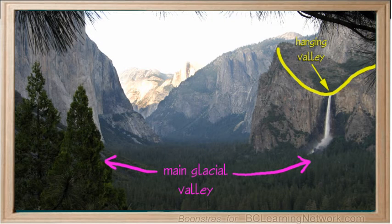Truncated, that is, cut-off ridges and hanging valleys form when small valley glaciers merge with a single large valley glacier.